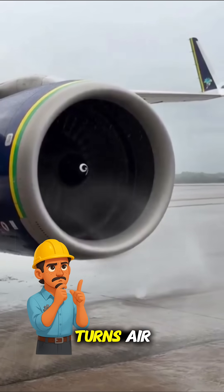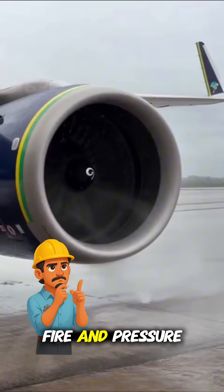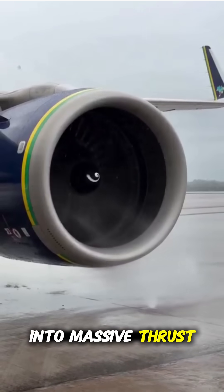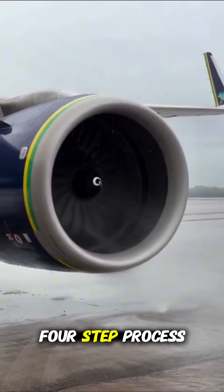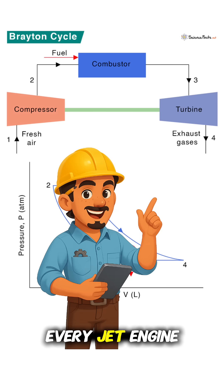Ever wonder how a jet engine turns air, fire, and pressure into massive thrust? There is a four-step process that powers every jet engine, which is called the Brayton cycle.